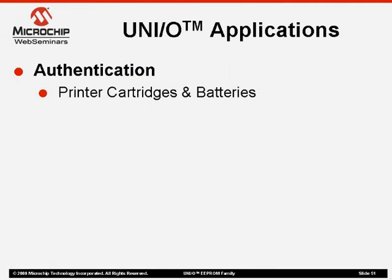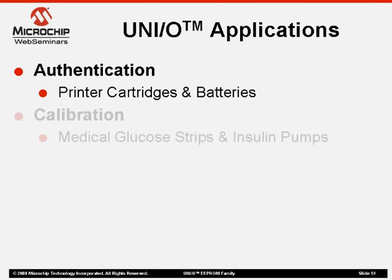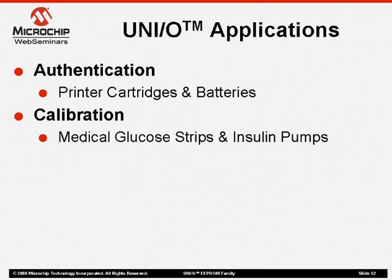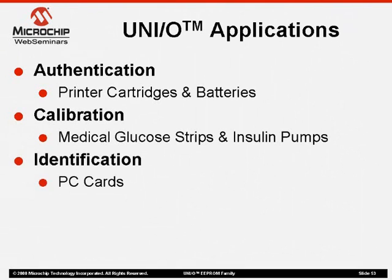Even though the UniO family is new, we have identified a few applications where this type of memory can be used. For applications where authentication is required, UniO devices can be used in printer cartridges or batteries. In applications where calibration parameters need to be stored, the limited I/O is very useful in medical applications like glucose strips or insulin pumps. If identification is a requirement, PC cards can also use the UniO device for the enumeration memory. When cabling is an issue and you have a data logging requirement, the single signal line is definitely an advantage.